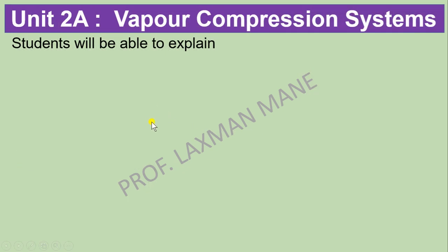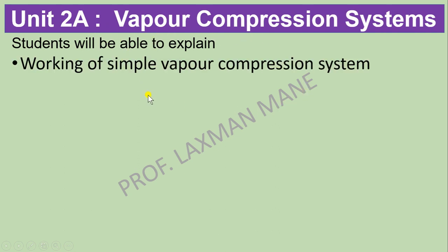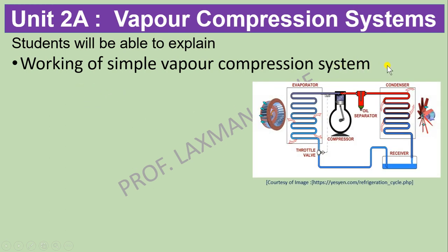The second unit is Vapor Refrigeration System, which has again two parts. Part A is the Vapor Compression System. In this unit you will be able to explain the working of Simple Vapor Compression System, which is used in air conditioners, refrigerators, and most refrigeration and air conditioning devices. This system consists mainly of four parts: Evaporator, Condenser, Expansion Valve, and Compressor.